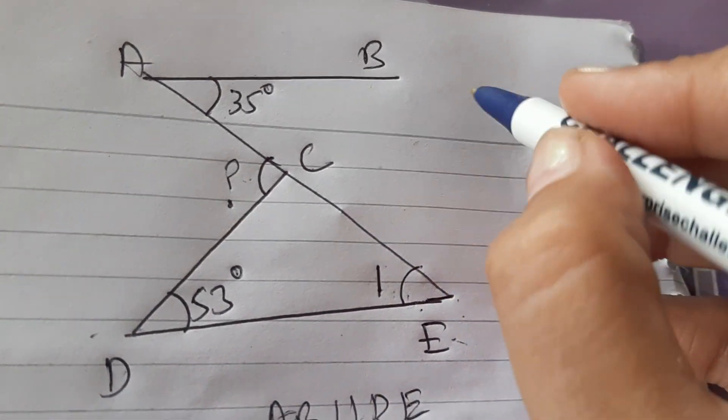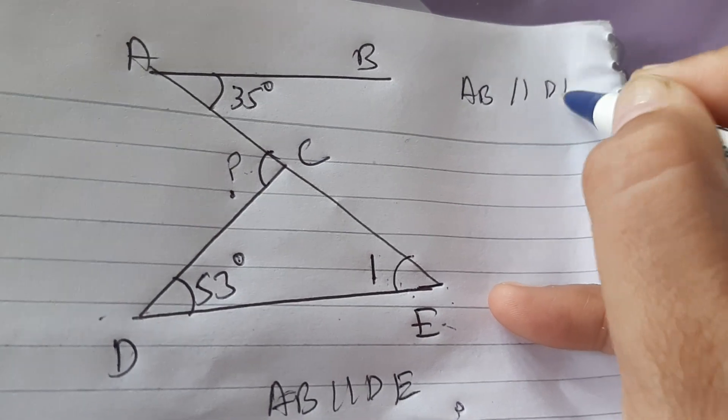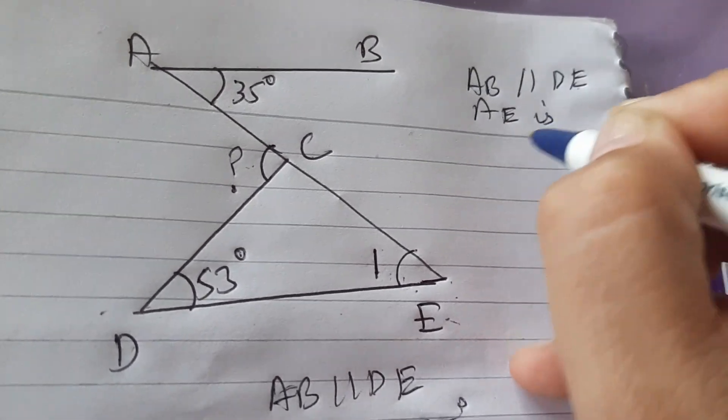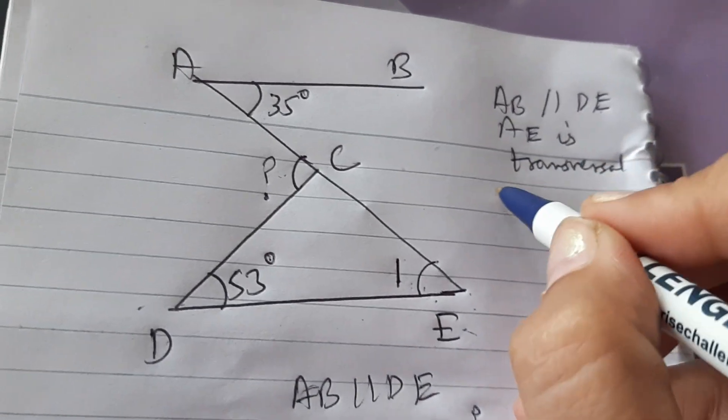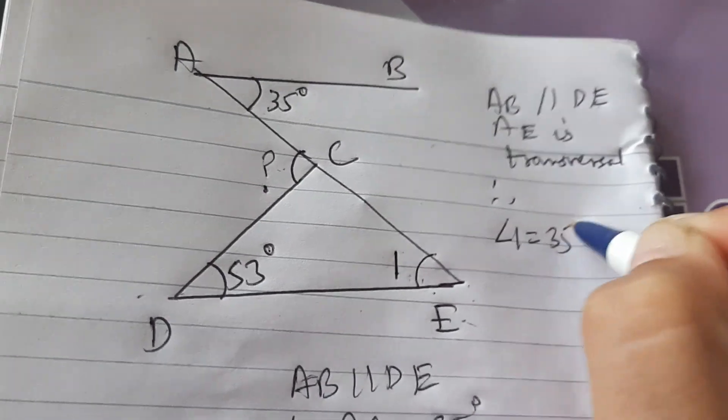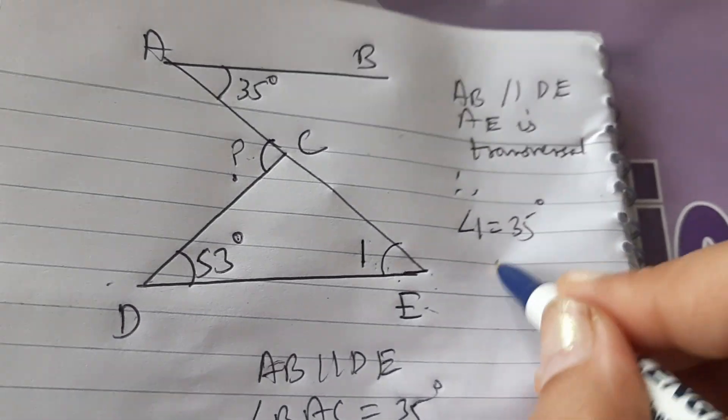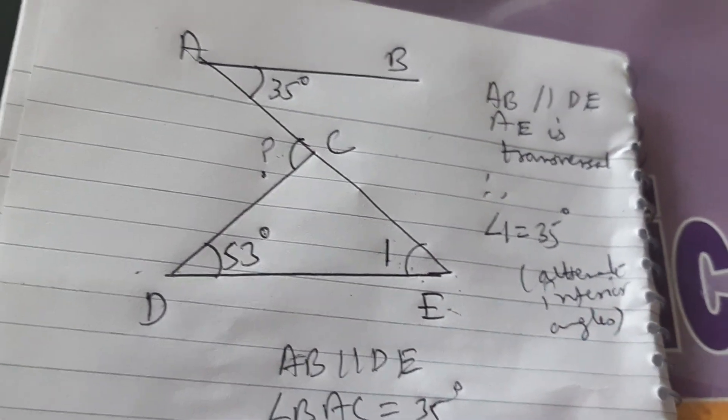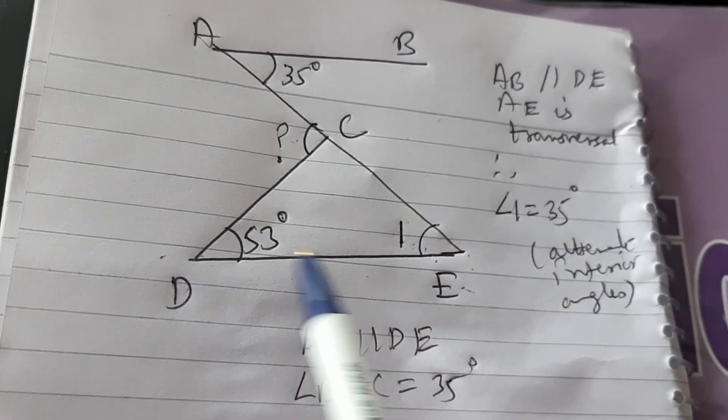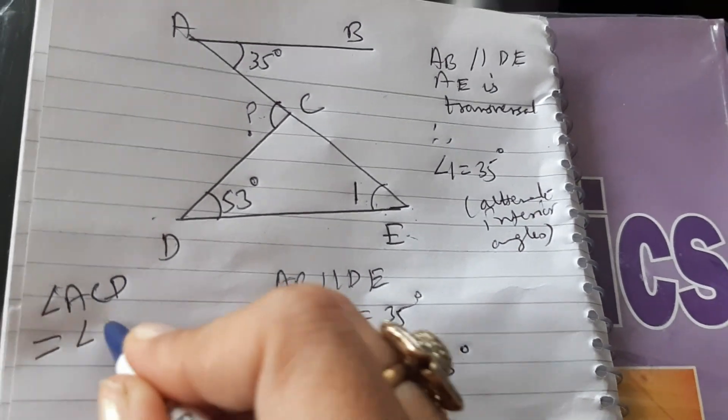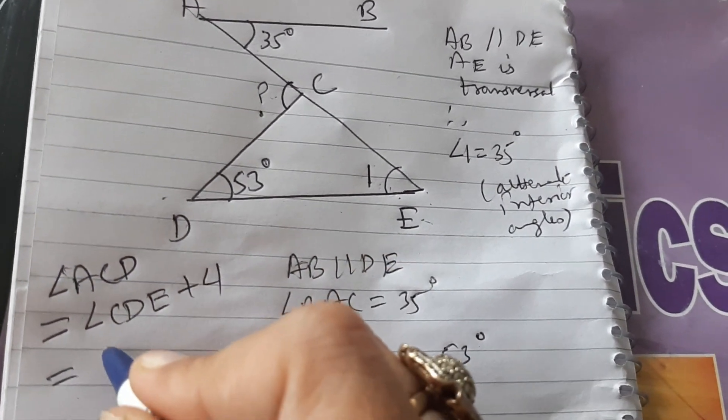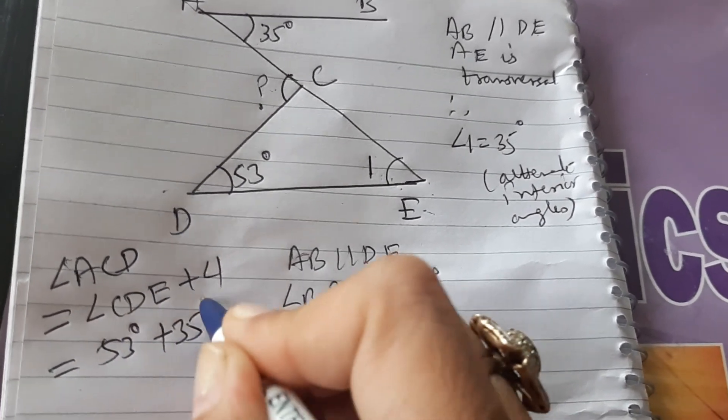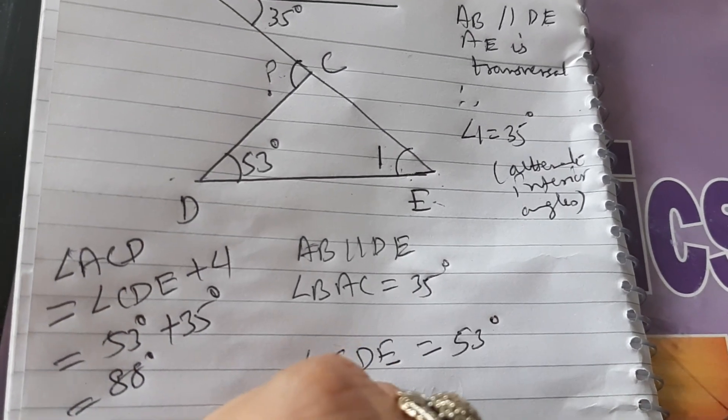So we will quickly write down its solution. AB is parallel to DE. AE is transversal. Therefore, angle 1 is equal to 35 degrees by alternate interior angles. After that, we will see in triangle CDE, angle ACD is exterior angle. So angle ACD will be equal to angle CDE plus angle 1 which is equal to 53 degrees plus 35 degrees which is equal to 88 degrees. So this is the answer.